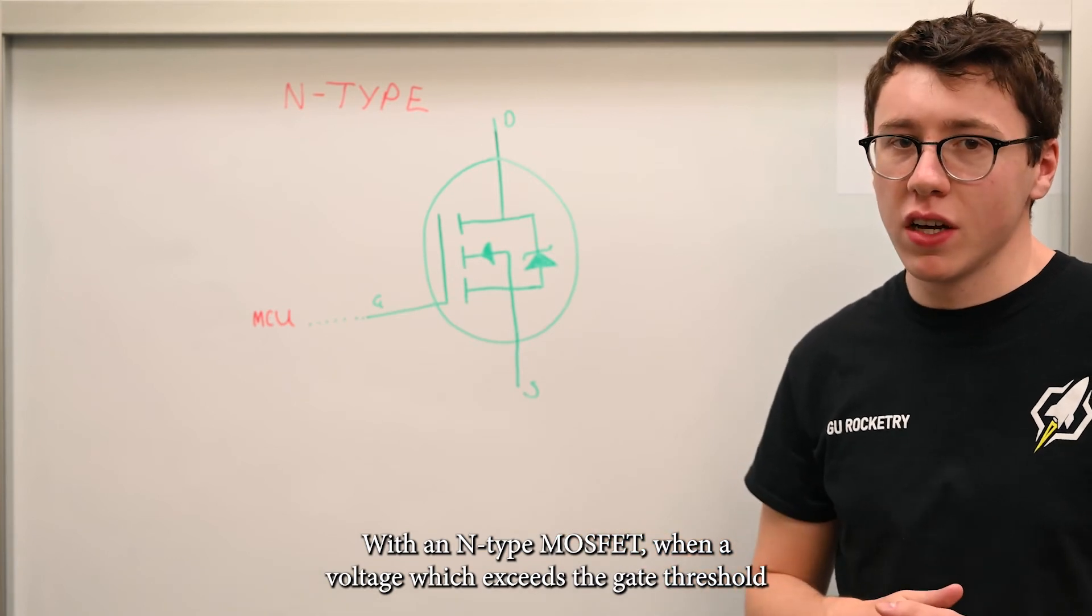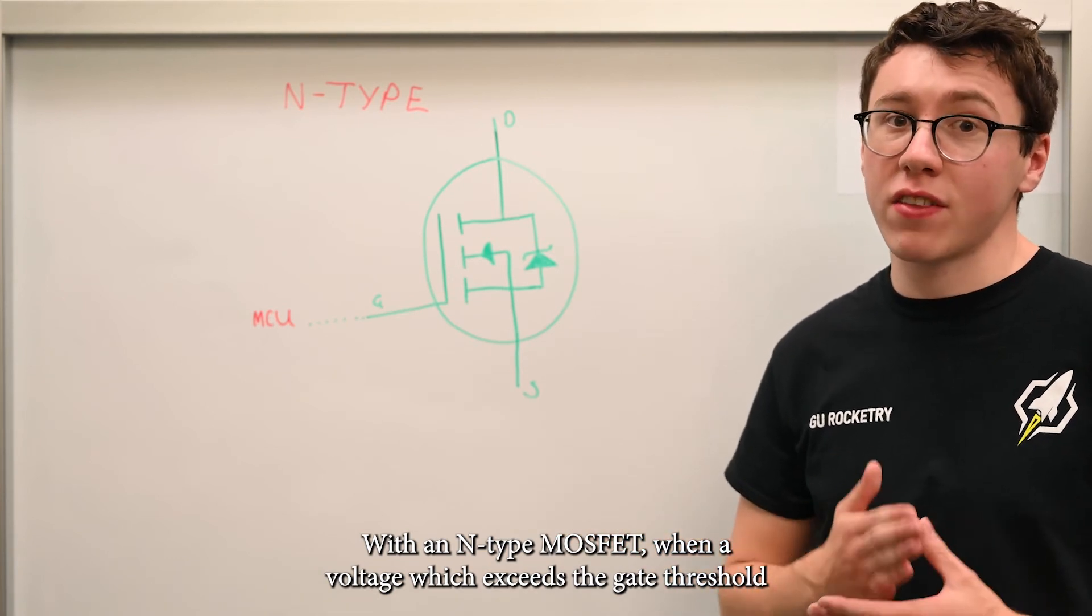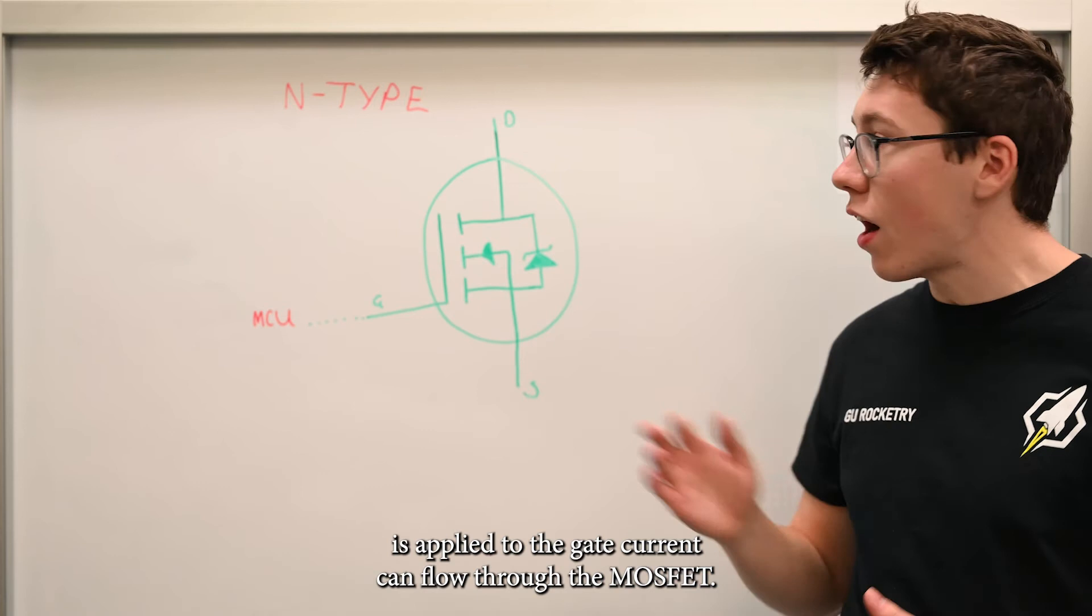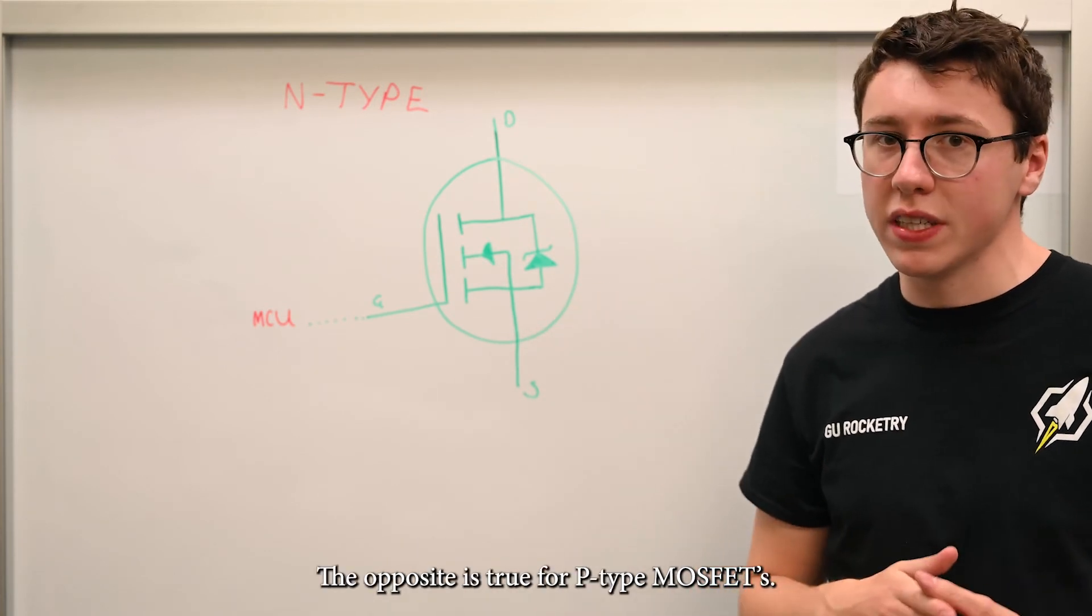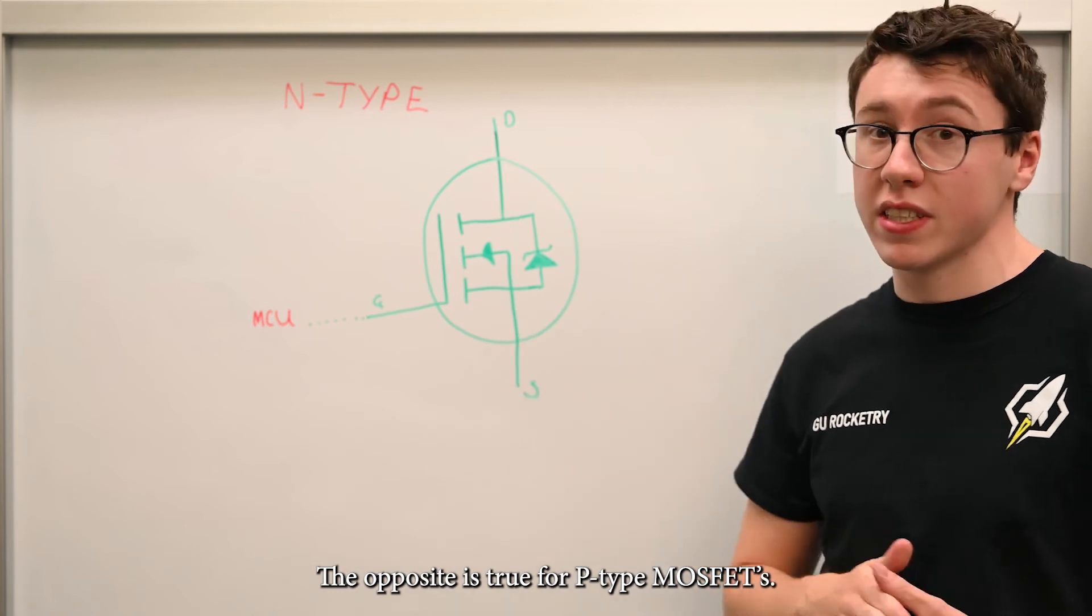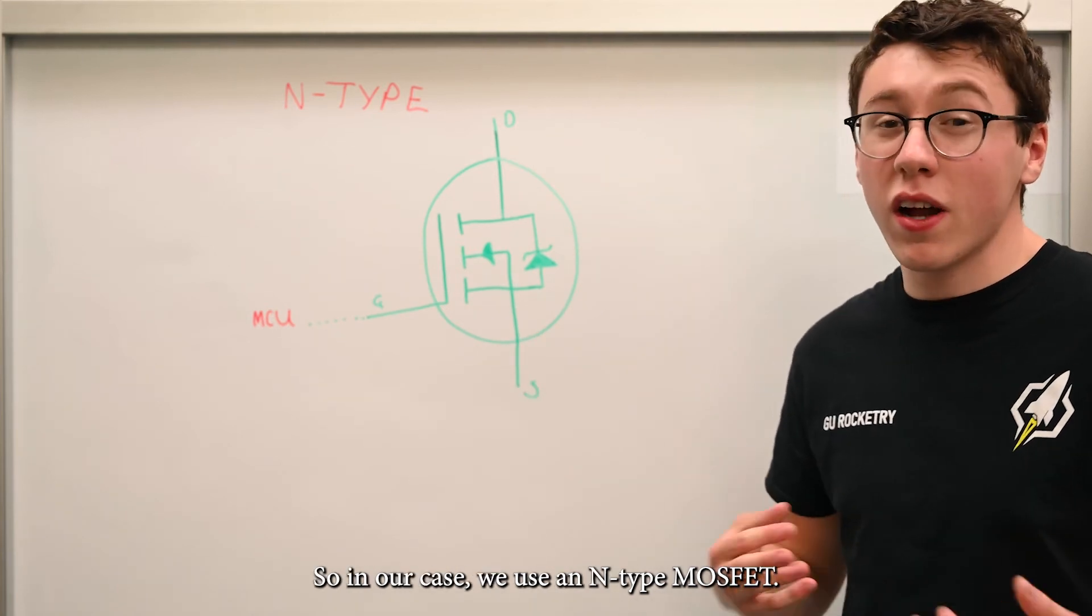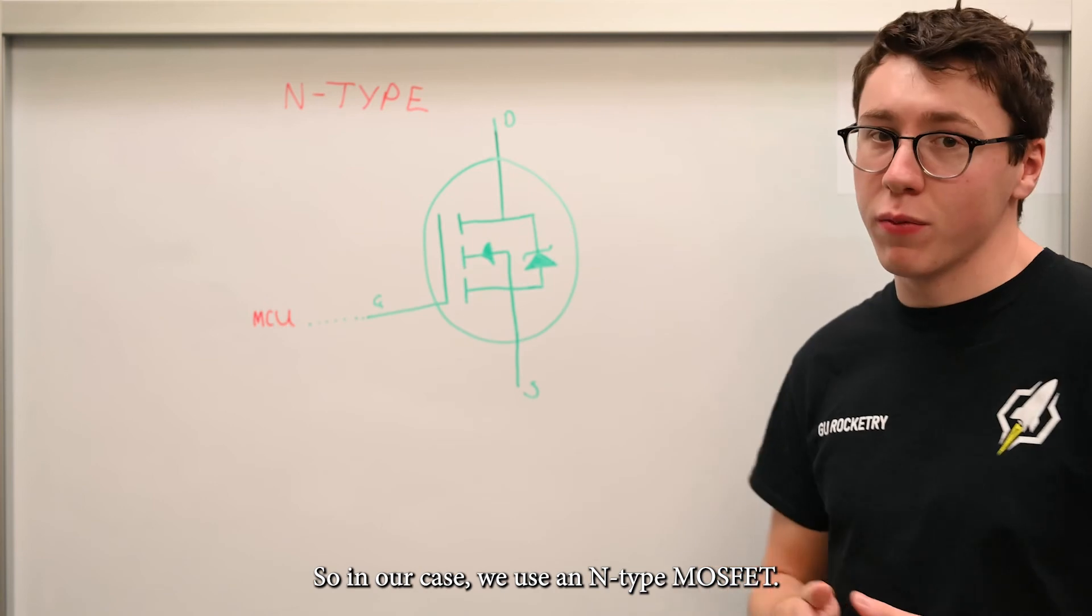With an N-type MOSFET, when a voltage which exceeds the gate threshold is applied to the gate, current can flow through the MOSFET. The opposite is true for a P-type. When the gate threshold is exceeded, current cannot flow through. So in our case, we used an N-type MOSFET.